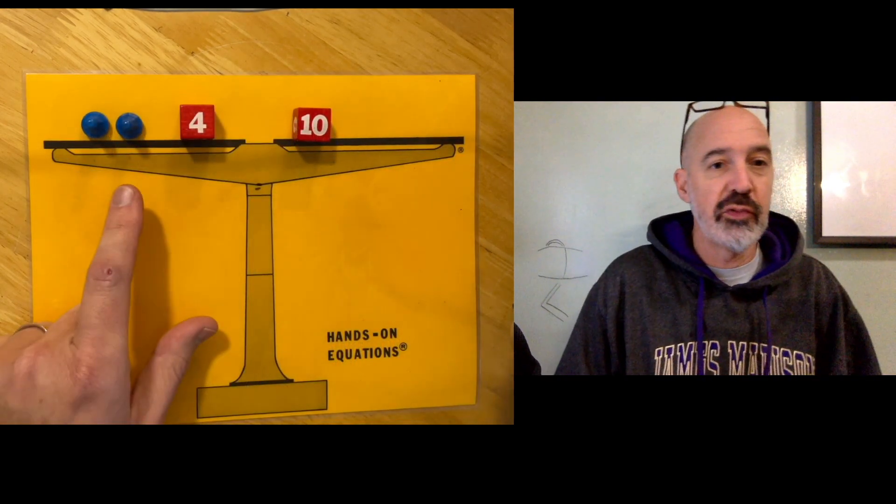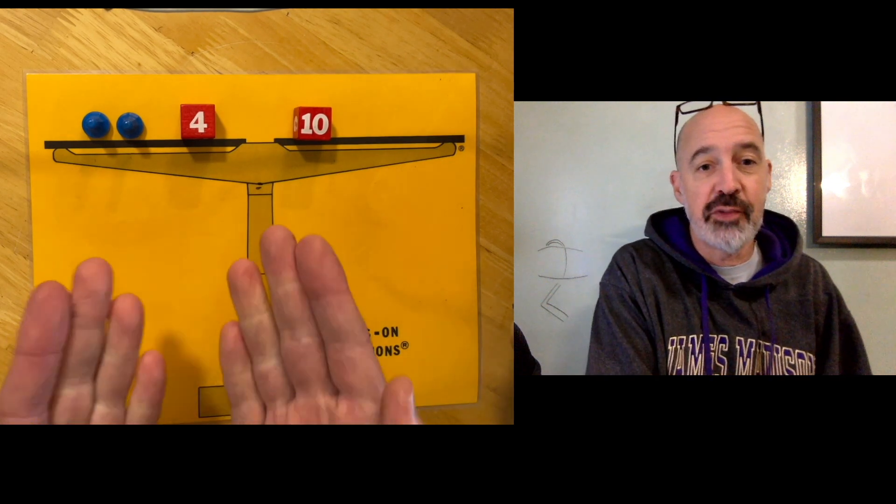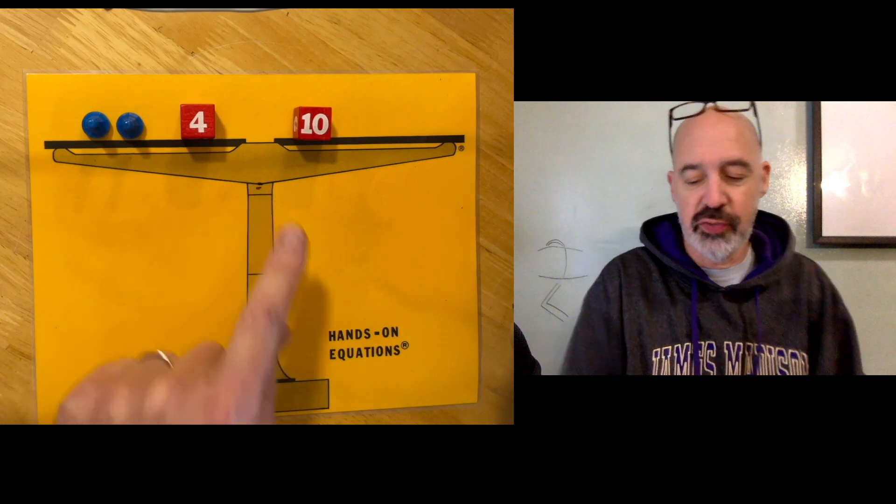So now we have two pawns plus 4 equals 10. And I still have to keep this in balance, right? So that means something plus something plus 4 equals 10.